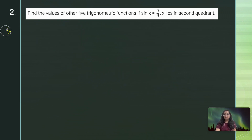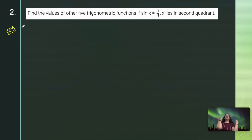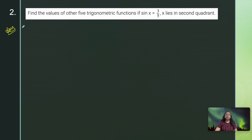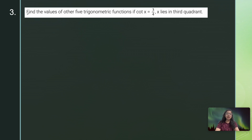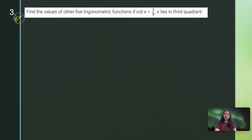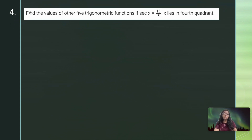Question 2: Find the values of the other 5 trigonometric functions if sin x is given and x lies in the second quadrant — I am giving this as homework. Question 3 is also a third quadrant problem, so take it as homework too. If you have any doubt, just comment below.